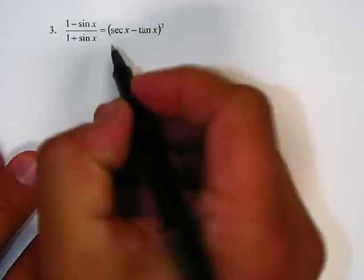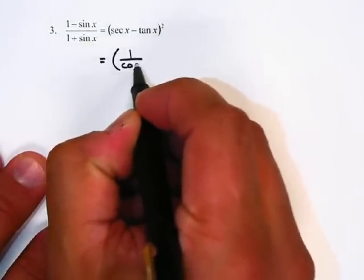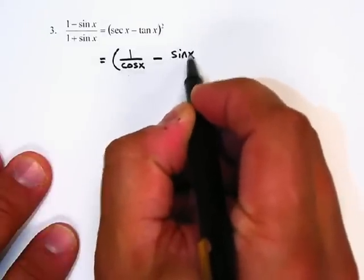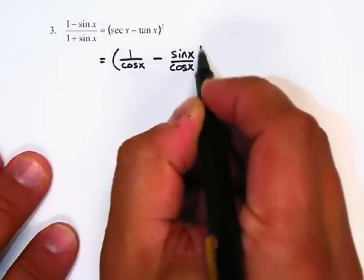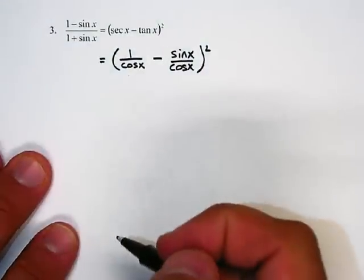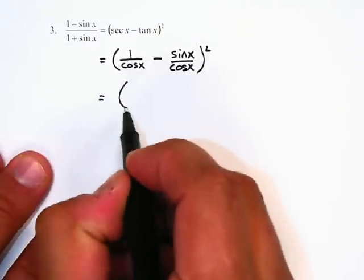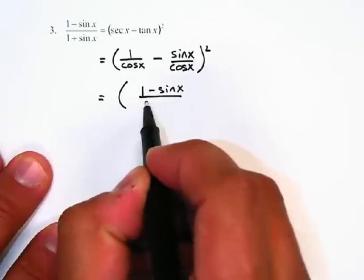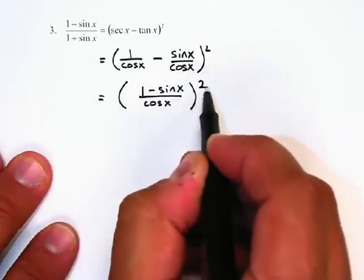The first thing I'm going to do is follow my own directions this time. I'm going to put secant as one over cosine, and tangent as sine of x over cosine of x. I keep the squared out there because that's what happens. I have common denominators, so I can write one minus sine of x all over cosine of x, quantity squared.